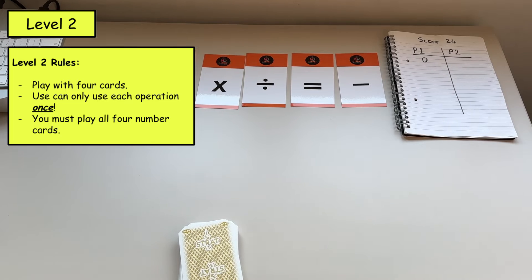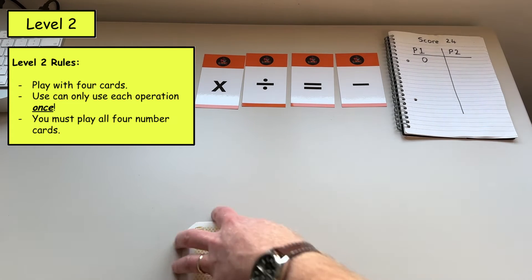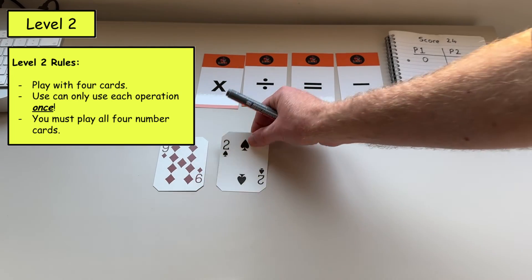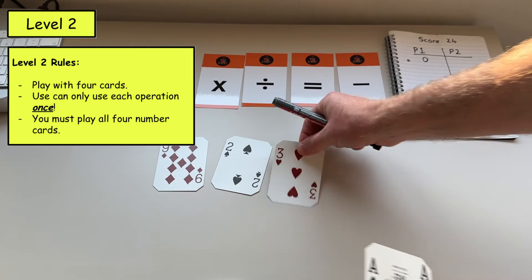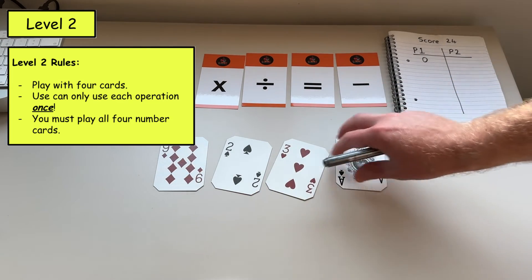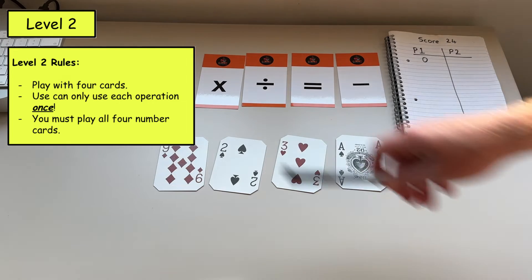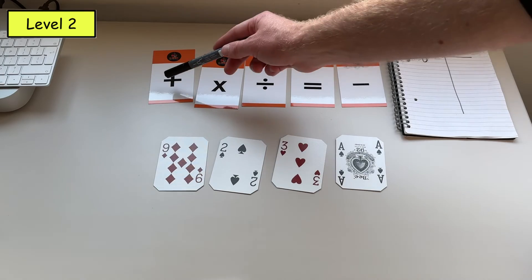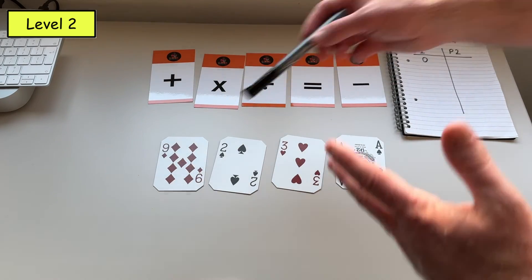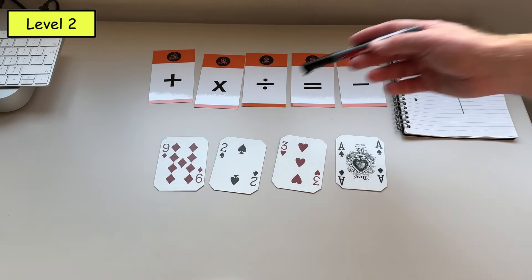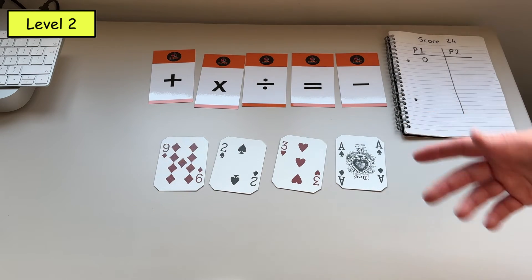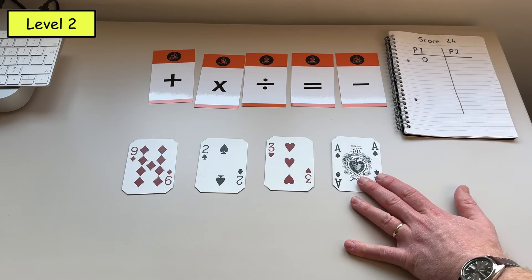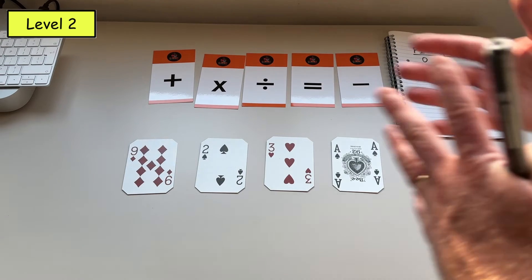So for level two, the rules are basically the same. Four cards are drawn at the beginning. So a nine, a two, a three, and an ace. But this time, the difference is only one operation can be used. So I can't have add, add, add, add, or I can't have multiply twice. I'm only allowed to use each operation a maximum of once. So I would not be able to go nine add two add three add one like I did at level one.